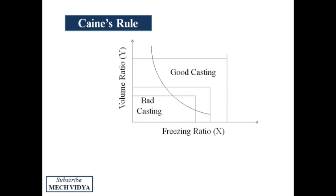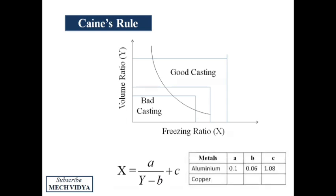Now one limitation of this approach is that it cannot predict the size of the riser which will give you very good casting. So Caine developed an empirical relation, which relates X with Y and three other constants ABC. These constants were discovered experimentally for different metals.